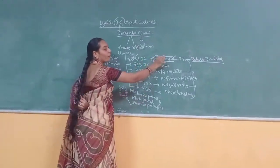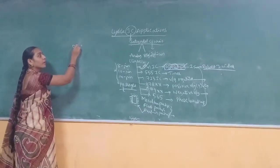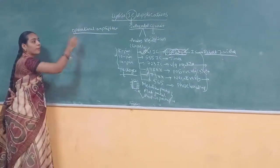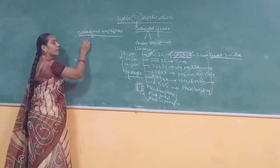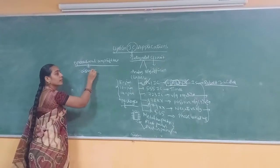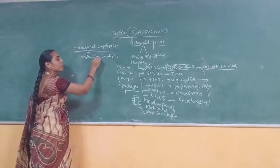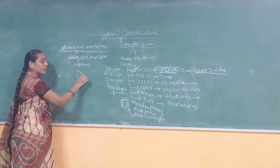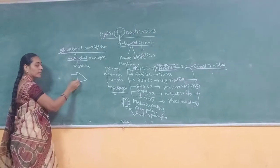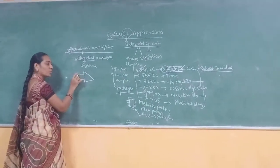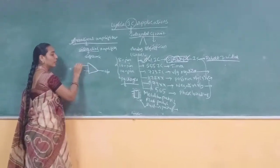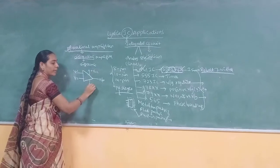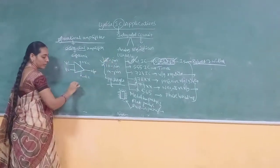Now coming to the main topic — the operational amplifier. An operational amplifier amplifies the difference between two signals. This operational amplifier is also called a differential amplifier, because it amplifies the difference. The operational amplifier has two input terminals and one output terminal, and also two power supply terminals — a positive supply and a negative supply. Its symbol is represented just like a triangle.